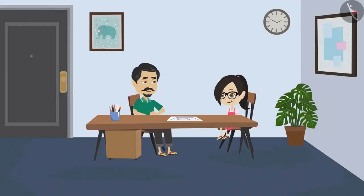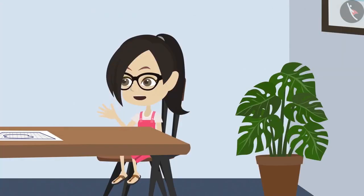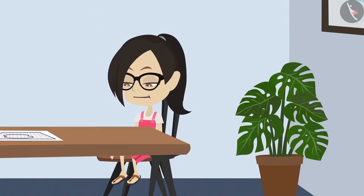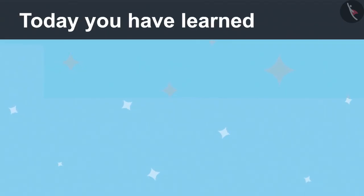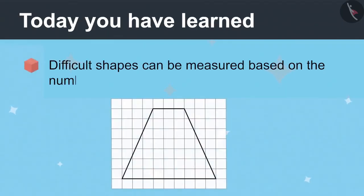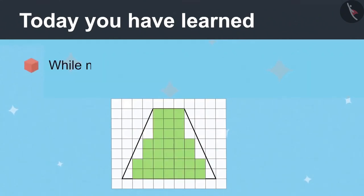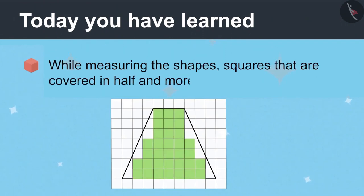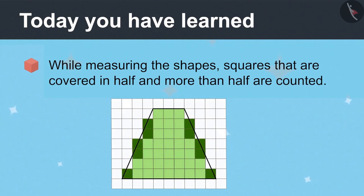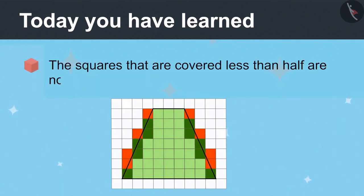Oh, wow, Vandana. You have already become an engineer. No, Dad. There is still a lot to study for that. Today, you have learned that difficult shapes can be measured based on the number of squares they are covering. And, while measuring the shapes, squares that are covered in half and more than half are counted. The squares that are covered less than half are not counted.